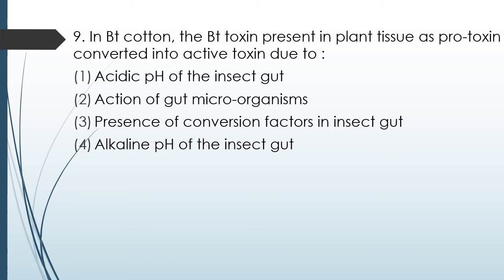Question No. 80: In BT cotton, the BT toxin present in plant tissue as a protoxin is converted to an active toxin due to: acetic pH of the gut intestine, action of gut microorganisms, presence of conversion factors in the insect gut, or alkaline pH of the gut intestine. The correct answer is Option 4 — alkaline pH of the insect gut.